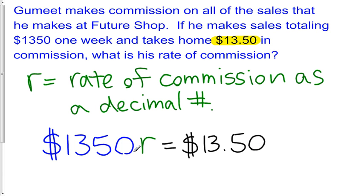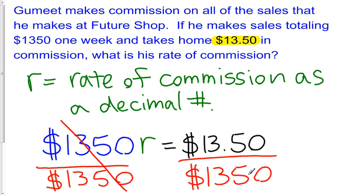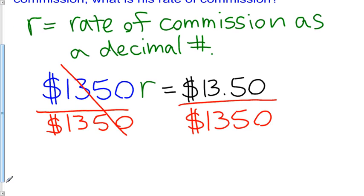Now here we have multiplication, so we want to isolate the variable R. We want to solve for R, and in order to do that, we need to use inverse operations. To get rid of this multiplication by $1,350, we need to divide both sides by $1,350. These are going to cancel out, and we're going to wind up with an expression where R is all alone. R is going to be equal to $13.50 divided by $1,350.